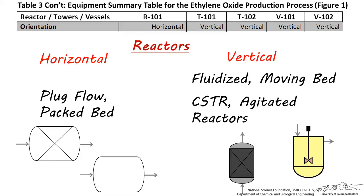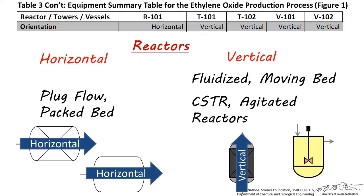I recommend choosing the orientation based on the flow of the fluids through the unit. If gases are moving upward, such as in a fluidized bed, choose vertical. If fluids are moving across a bed or through horizontal tubes, choose horizontal. If liquid is being poured into the reactor, choose vertical.